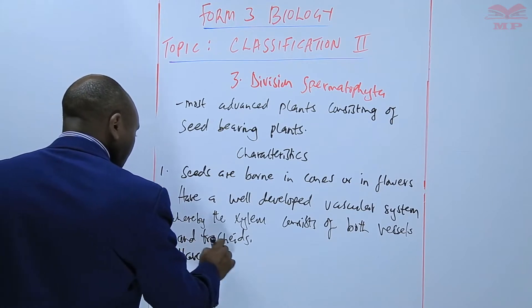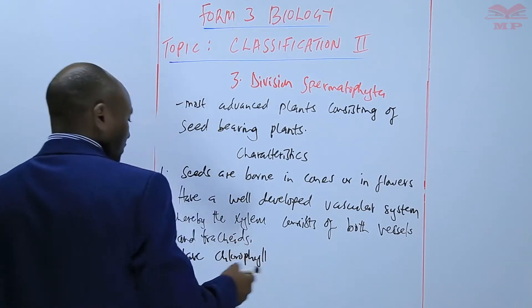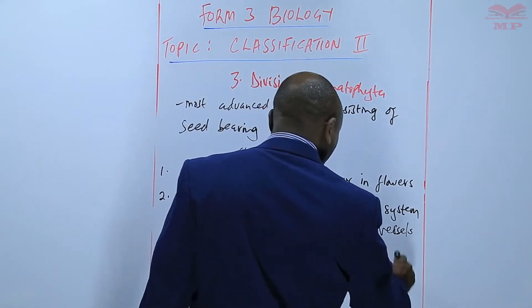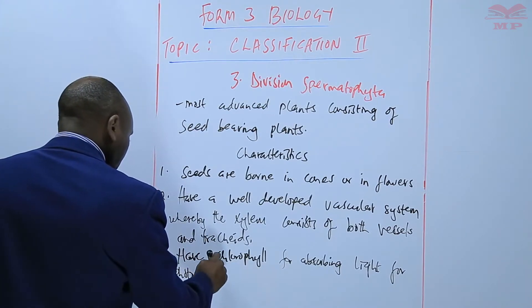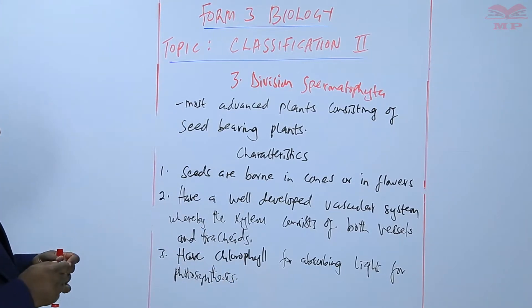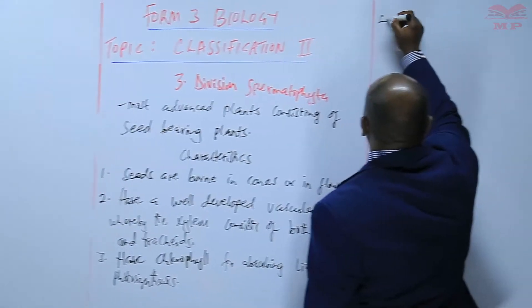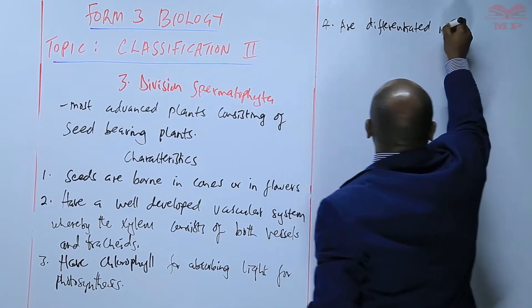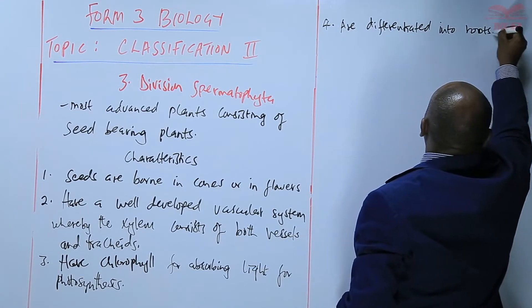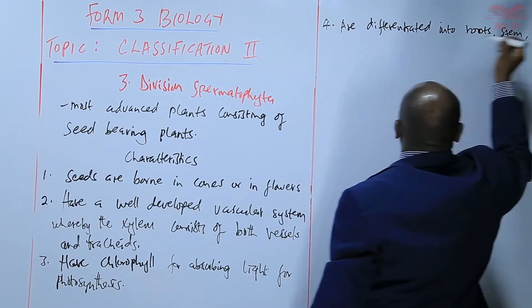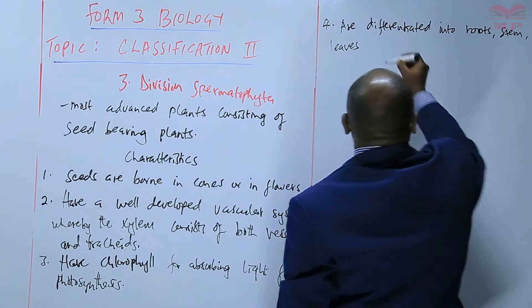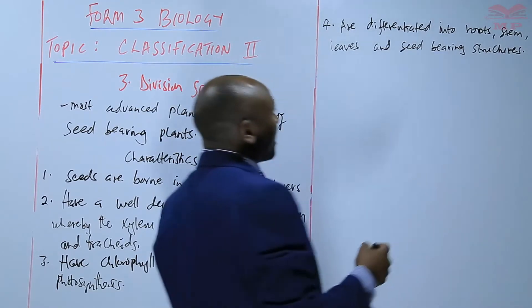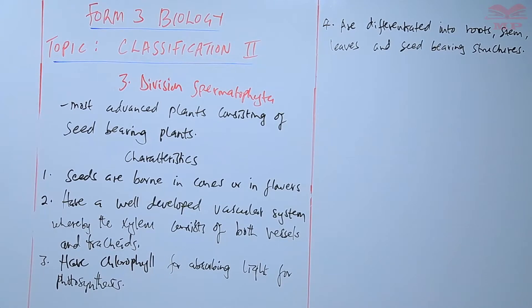They have chlorophyll for absorbing light for photosynthesis. These plants are also differentiated into roots, stem, leaves, and seed-bearing structures. So they are a very well-advanced group of plants.